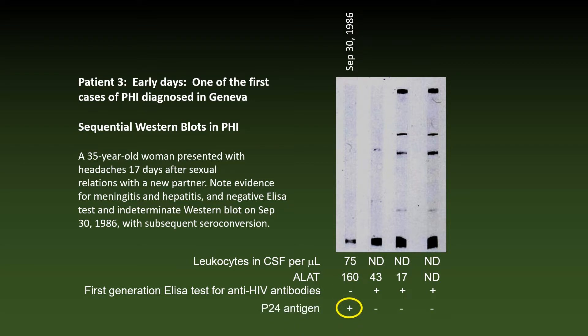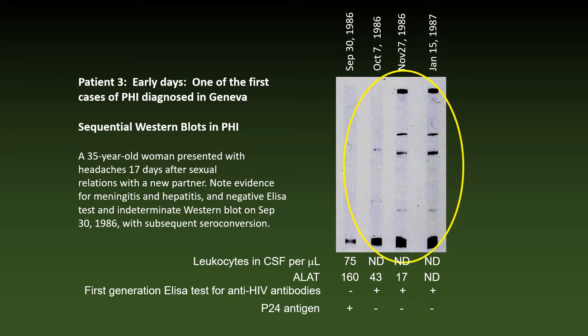On subsequent dates — October 7, November 27, January 15 — more and more bands appeared in the Western blot. The ELISA test turned positive, while the P24 antigen as well as all the symptoms disappeared. We lost track of this patient for some 10 years, but in 1996 she had herpes zoster.